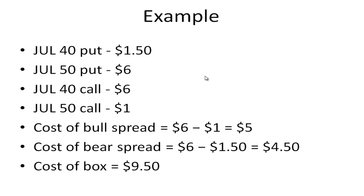Let's also assume the July 40 call costs $6 and the July 50 call costs $1. The cost of the bull spread is $5. So the cost of the box is the cost of the bull spread plus the bear spread, which is $9.50.